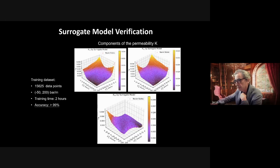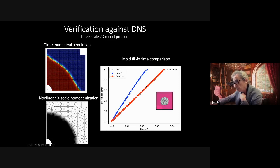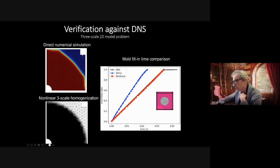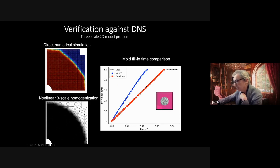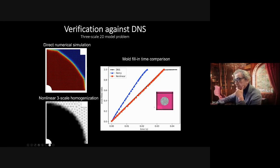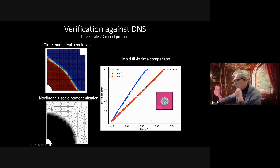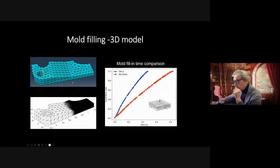Comparing the full Navier-Stokes solution to the non-linear homogenization approach for a mold filling problem shows very good accuracy. Using Stokes equations instead of this non-linear homogenization would produce 40-50% errors. The computational cost of using this non-linear homogenization approach is two to three orders of magnitude lower than solving Navier-Stokes at the mold level. A three-dimensional mold filling problem shows a huge difference between data-driven non-linear homogenization and simple Darcy's law.